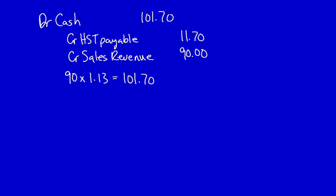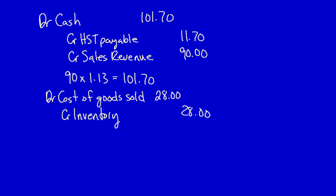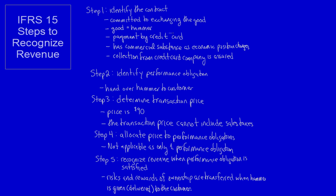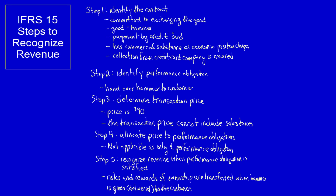In addition, the hardware store recognizes the associated costs of selling this hammer. What did the company get? They got use of the good to help generate revenue — that's an expense: cost of goods sold. What did they give away? They gave away inventory, which no longer has future economic benefit because the company no longer has it. That's the application of IFRS 15 revenue recognition for a basic good.